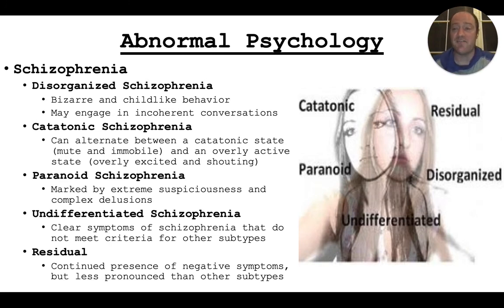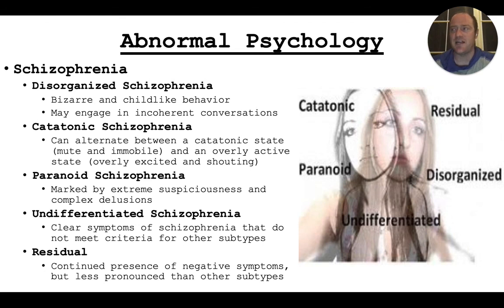Undifferentiated schizophrenia is when it's obvious that a person has schizophrenia, but they don't meet the criteria for paranoid, catatonic, disorganized, or whatever. And then residual schizophrenia is when you may have symptoms of schizophrenia, but they're not as pronounced. You may have the voices, but they're not as constant or as severe as you would with other schizophrenia diagnoses — but it's still symptoms of schizophrenia, so it falls under a category. It's just not as severe as the others.